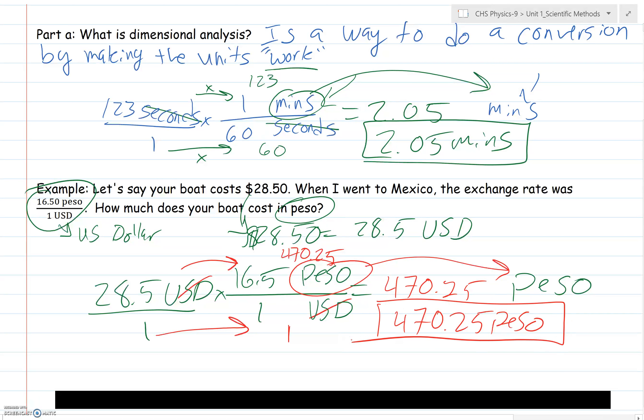There's a way you can always double check to see if you did this correctly. Look at this 28.5. Should my answer be bigger or smaller than 1 based off my rate? For every one USD, I get 16.5 peso. So if I have 28.5 dollars, of course I need to have more peso in the end. And look at that. In the end, I end up with a lot more peso. Let's do another example to hit this home a little bit harder.